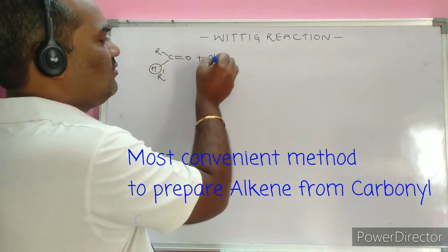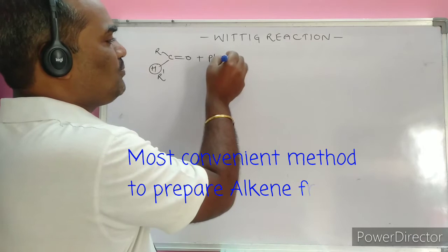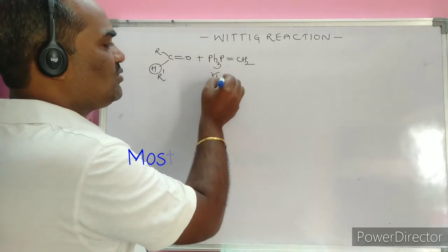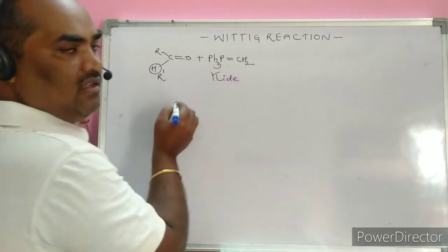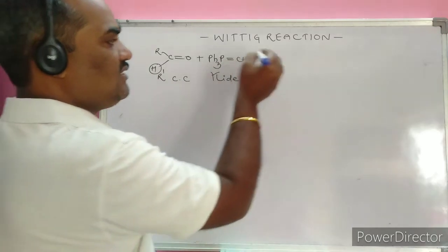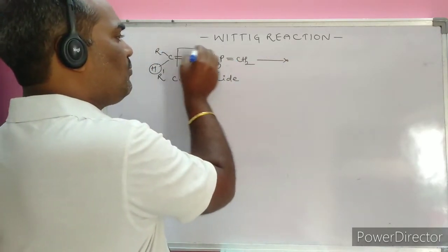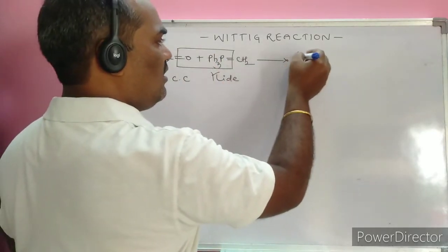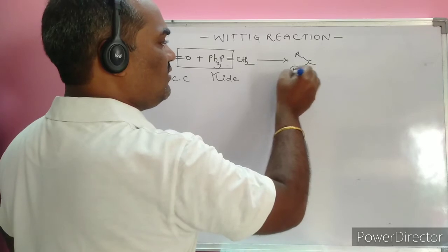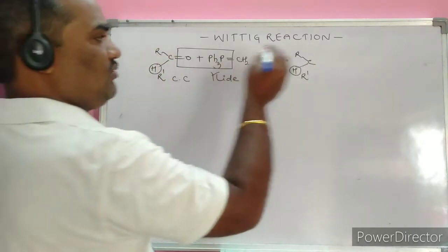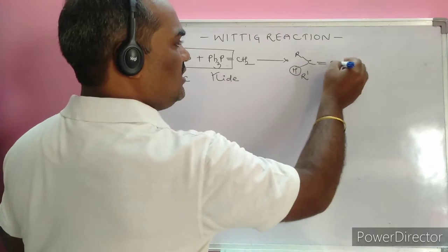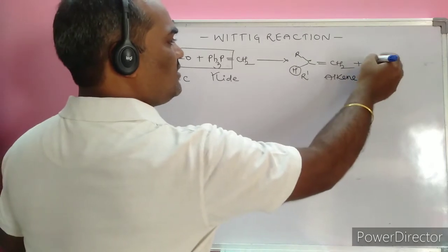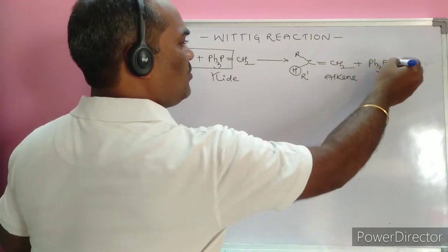The carbonyl compound reacts with the triphenylphosphorus ylide — this is the Wittig reagent, also called simply an ylide. In the Wittig reaction, if R' is H we have an aldehyde; if R' is R, we have a ketone. The CH₂ group forms an alkene (unsaturated hydrocarbon), and triphenylphosphorus oxide is formed as a byproduct.